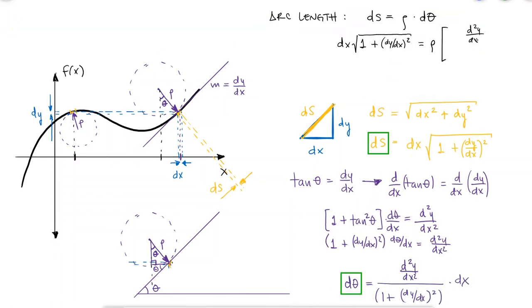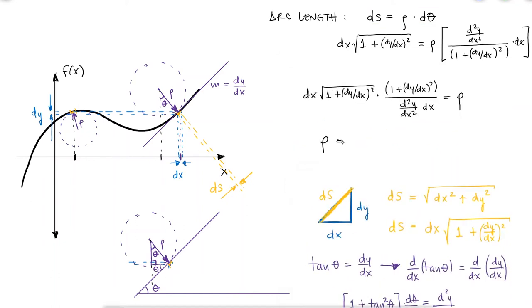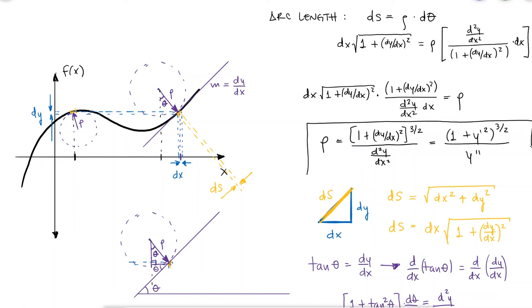Substituting ds and d theta in the arc length expression, we can solve for the radius of curvature rho, which yields (1 plus (dy/dx) squared) all to the power of 3/2 over d squared y over dx squared. Or in a simplified version, (1 plus y prime squared) all to the 3/2 over y double prime.